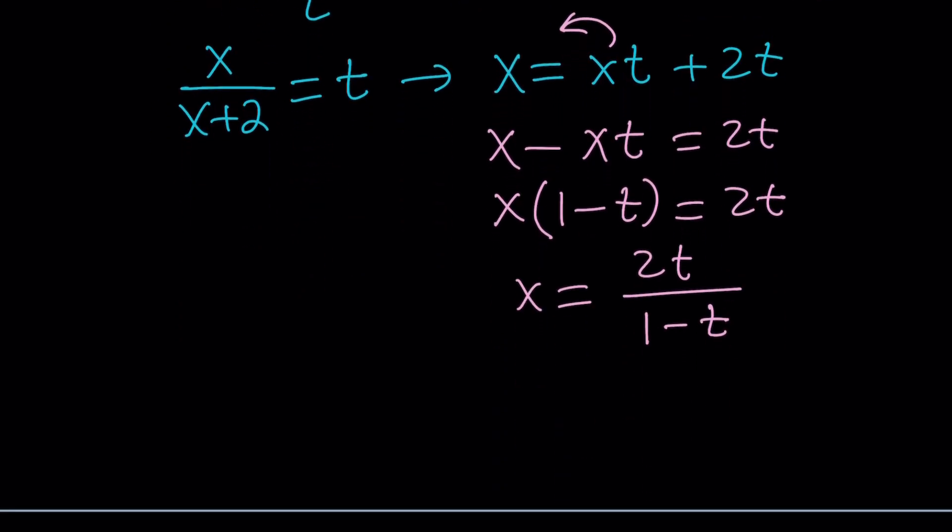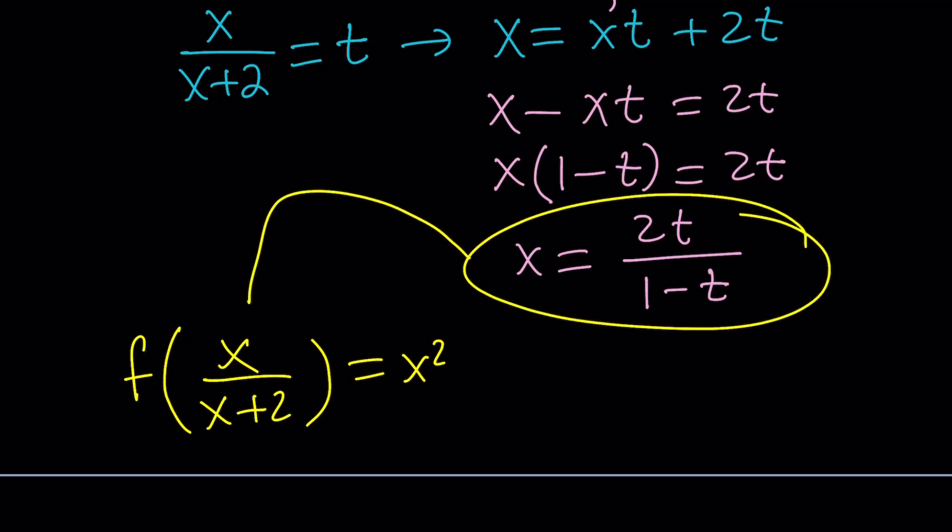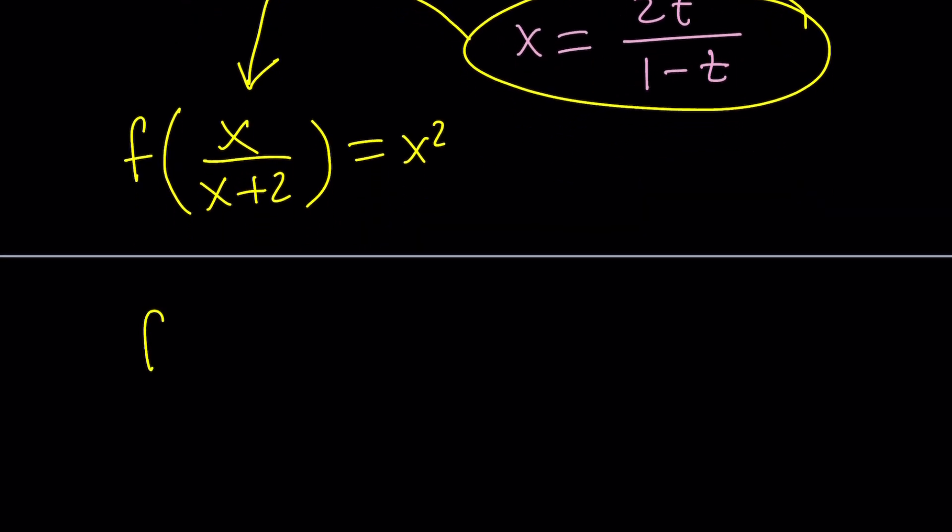Now we got this, obviously, and we have our equation still, f of x over x plus 2 equals x squared. So what are we going to do with this x value? We're going to plug it in. We do know what happens on the left hand side, because that's what gives us t inside the parentheses. But for fun, you can actually go ahead and plug it in again, kind of like a double check. What if we made a mistake? Because in that case, our substitution is not going to work.